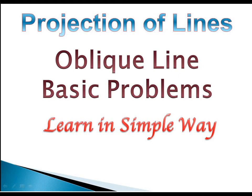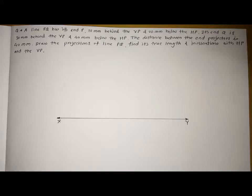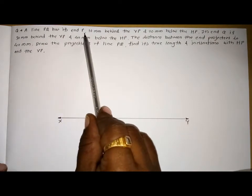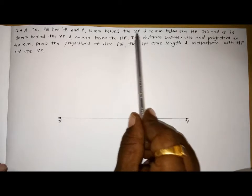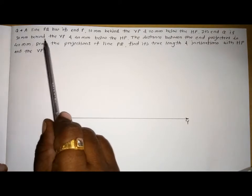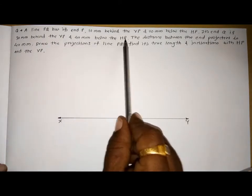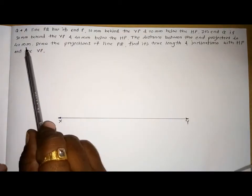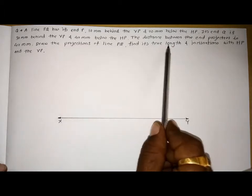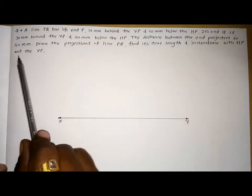Hello friends, today we are going to solve one more problem related to projection lines, a little bit ahead of the last problem. The problem is: a line PQ has its end P 10 mm behind the VP and 20 mm below the HP. Its endpoint Q is 30 mm behind the VP and 40 mm below the HP. The distance between the end projectors is 40 mm. Draw the projections of line PQ, find its true length and inclination with the HP and VP.